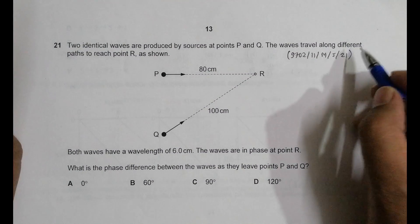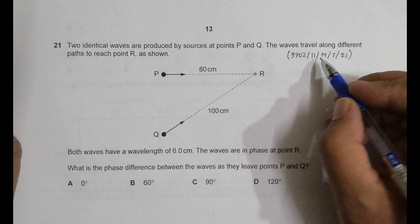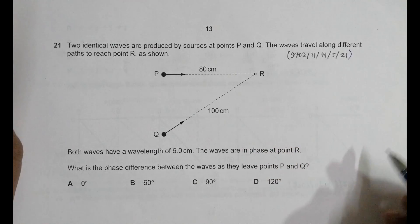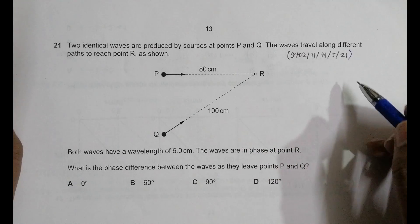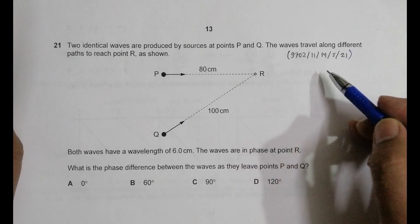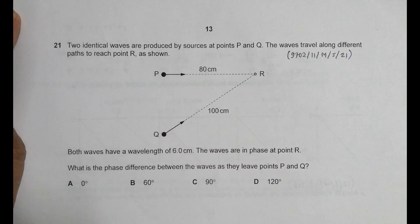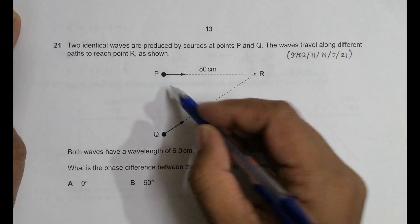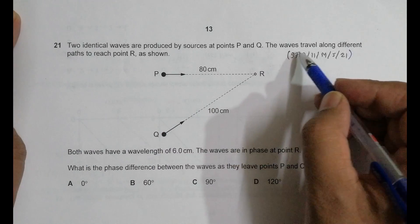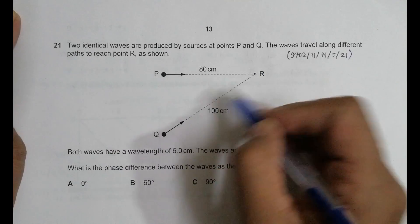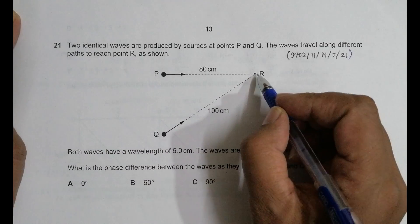Hello folks, this is 2021 major paper 11 and the question number is 21. As you can see from the question, it is concerned with the chapter waves. It says that two identical waves are produced by sources at point P and Q. The waves travel along different paths to reach point R.